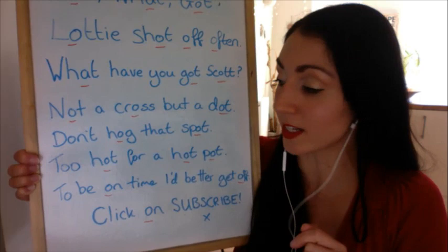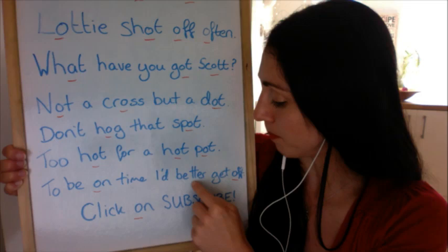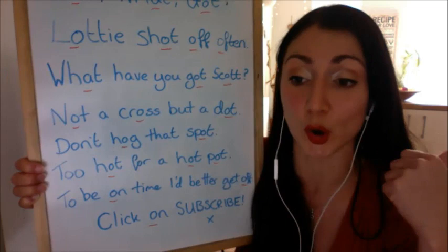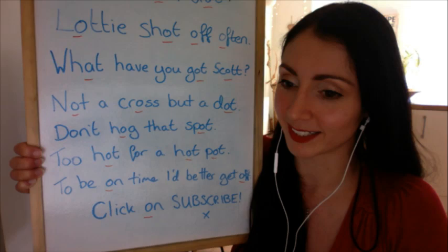We're getting close to our 10-minute point. 'To be on time, I'd better get off.' To get off is the same as to shoot off — it means to leave. 'I'd better get off' — I'd better get going, I'd better go. So: 'To be on time, I'd better get off.'